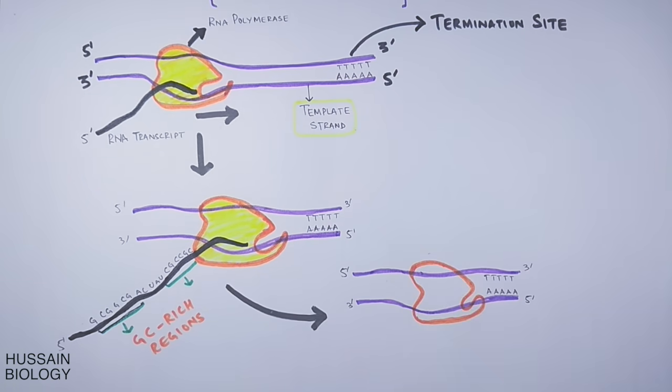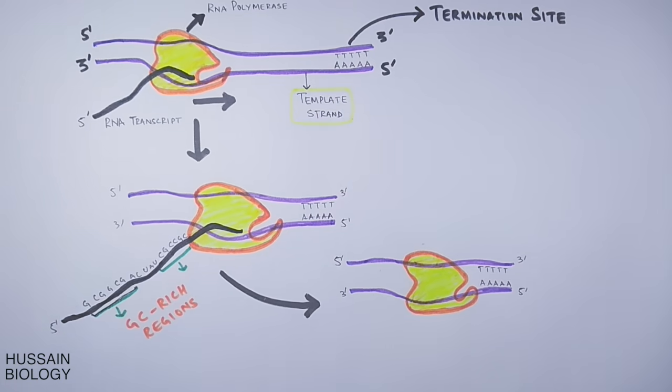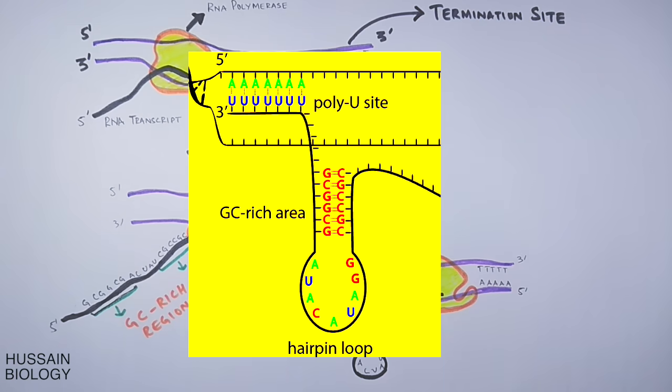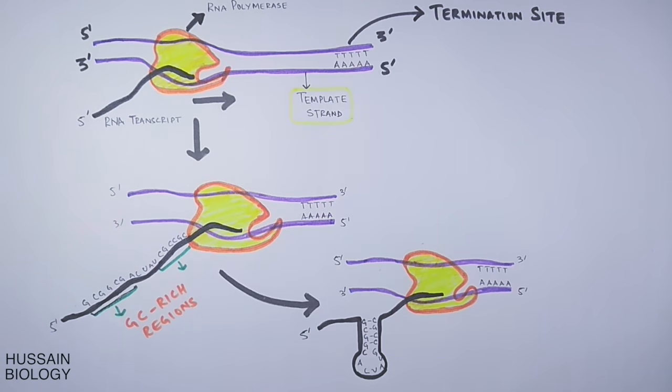What happens with these GC-rich regions is that the GC bases pair with each other and form a hairpin loop-like structure shown in the diagram. Actually, this loop forms due to palindromic sequences on the RNA transcript.